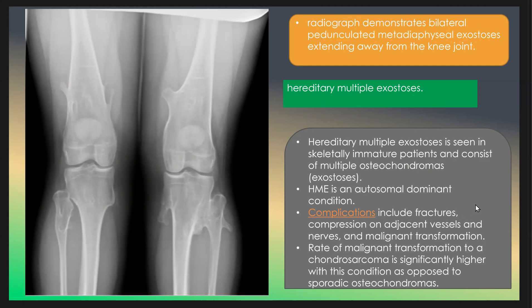The complications of hereditary multiple exostosis include fractures, compression of adjacent vessels and nerves, and malignant transformation. The rate of malignant transformation to chondrosarcoma is significantly higher with this condition as opposed to sporadic osteochondromas.